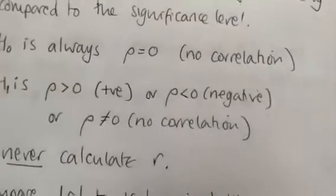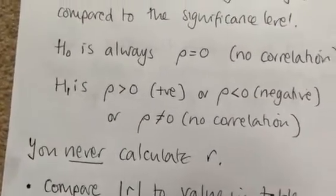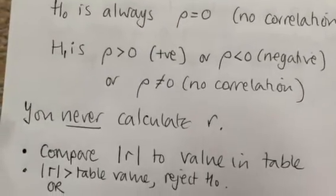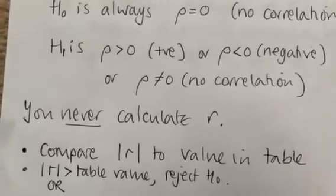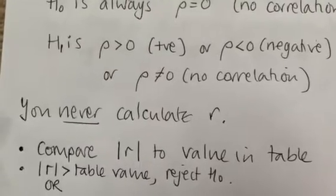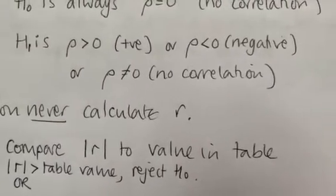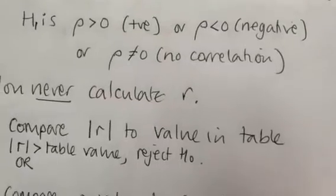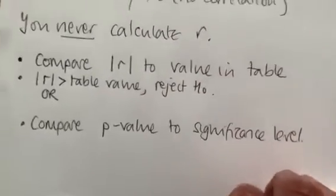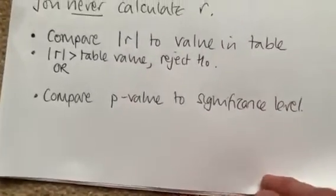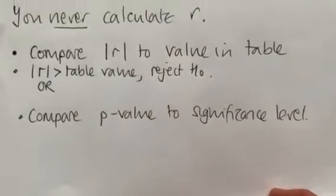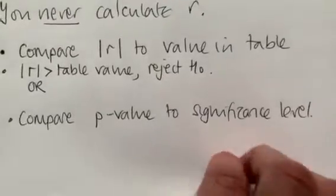Your alternative hypothesis could be rho is positive, rho is negative, or rho is not equal to zero. You won't be asked to calculate r. When doing a hypothesis test using the correlation coefficient, you compare the modulus of your correlation coefficient to the value from the table. If the modulus is greater than the table value, you reject the null hypothesis. If using the p-value method, you compare your p-value to the significance level and reject the null if it is less.